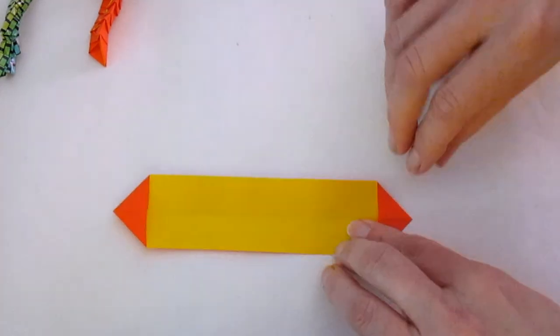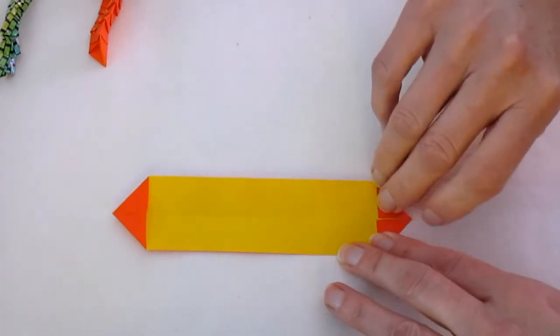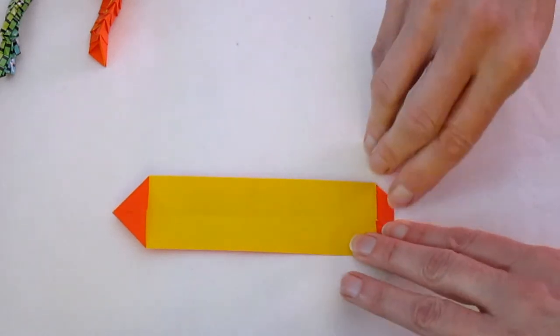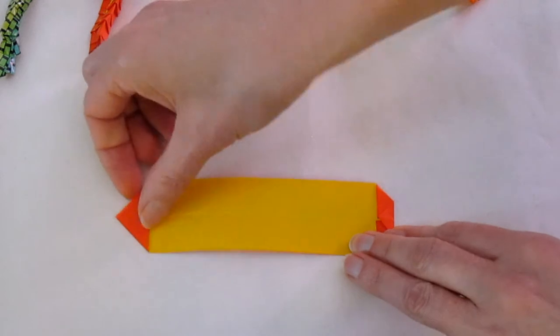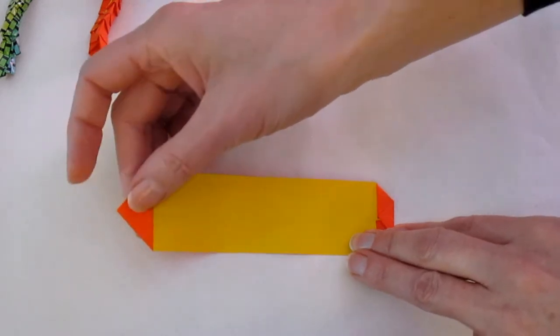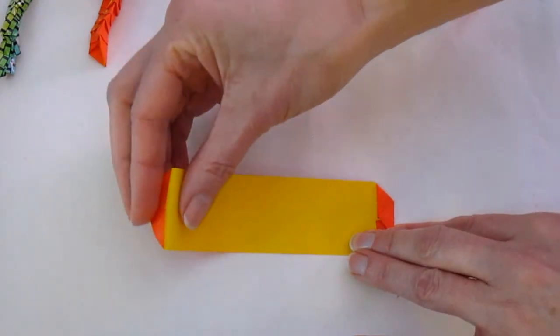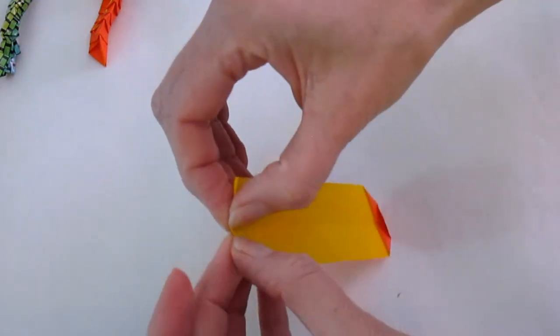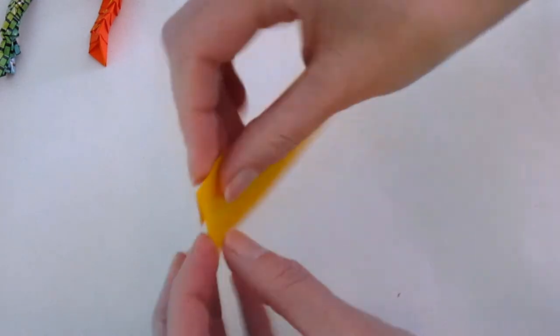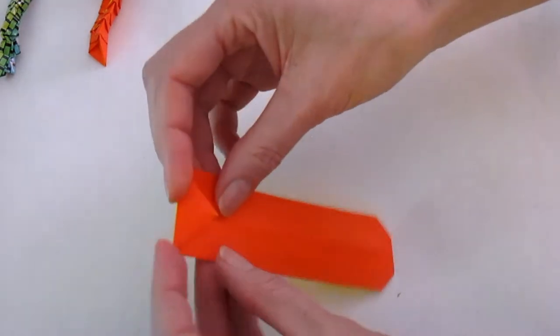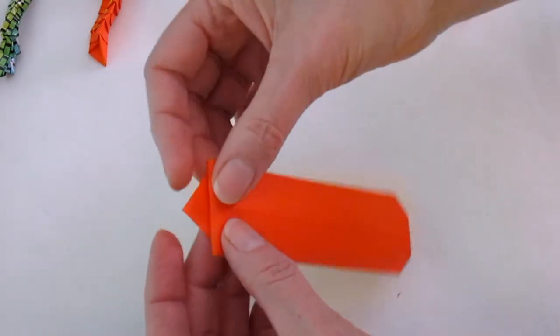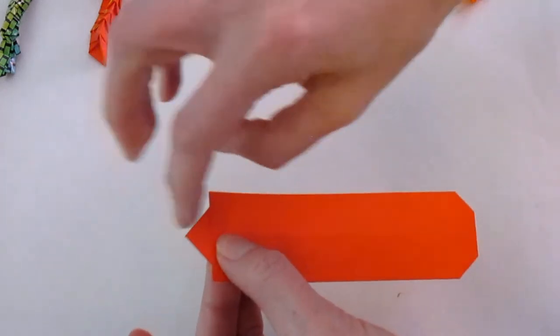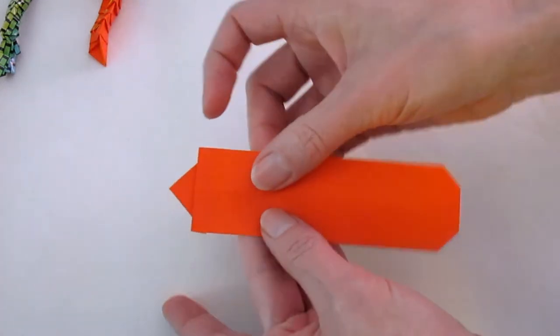Next thing we're going to do is choose one of the ends and take the tip of the triangle and fold it to the base. And then on the opposite end, we're going to fold the triangle to the back. And we're going to be doing a crease, and then turn the paper over, and then fold it over so that there's a little bit of the triangle facing out.